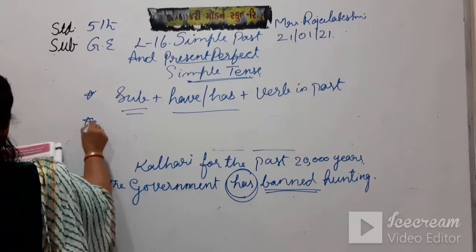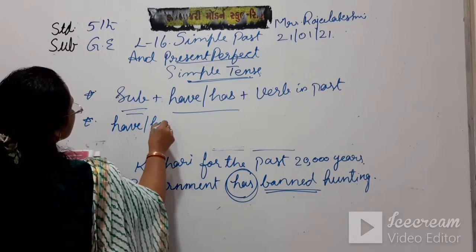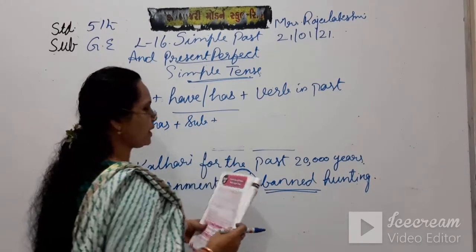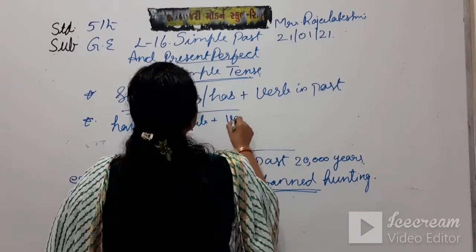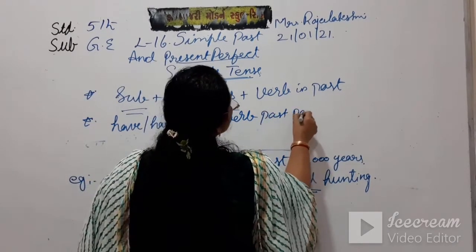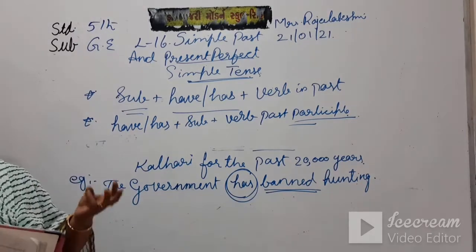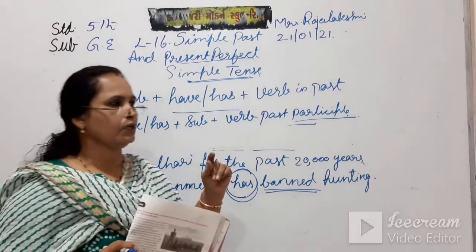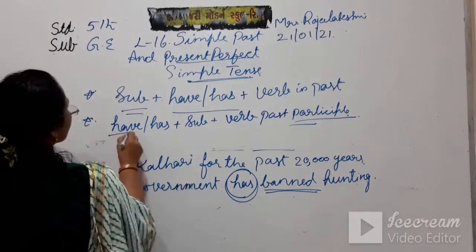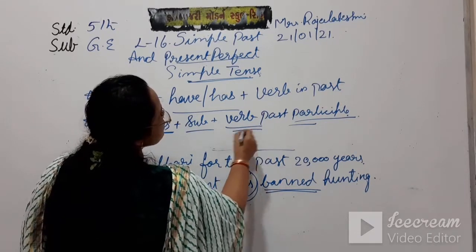To make a question in Present Perfect Simple, we use: Have or has + subject + past participle of the verb. For example, 'go' — the past participle is 'gone.' If singular, use has; if plural, use have. Then subject, then the past participle form of the verb.